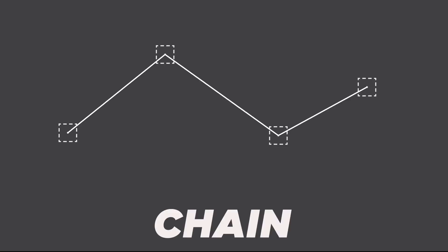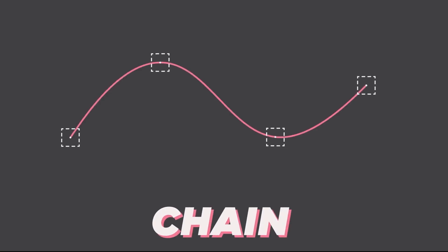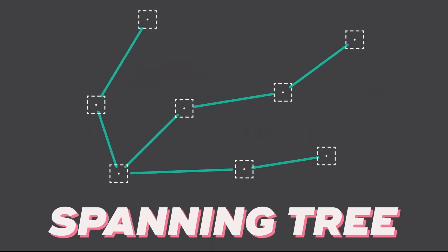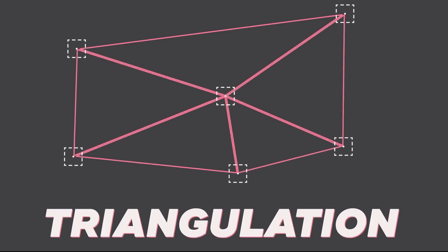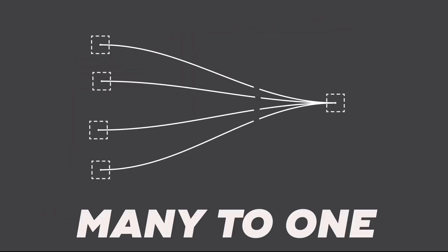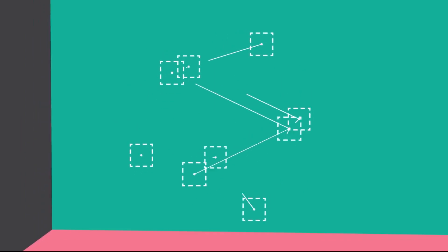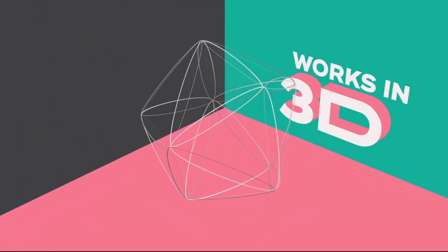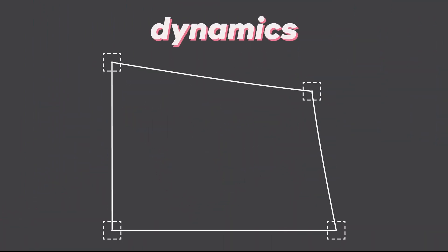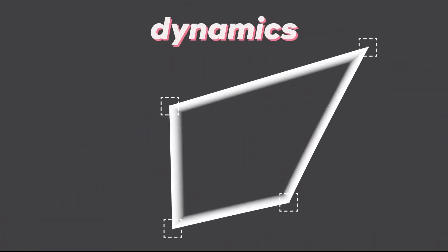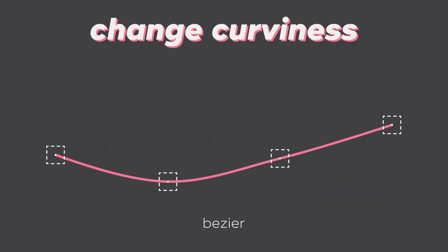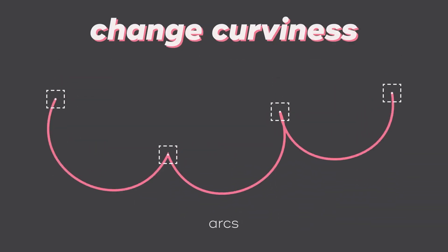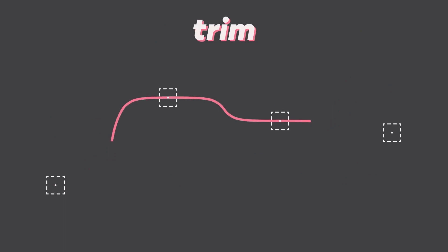Connect Layers is for connecting your After Effects layers with dynamic lines. I am personally using this tool on my motion graphics videos. You can create the same effect with the built-in plugin called Beam, but controlling them is always difficult. Connect Layers makes it easy and controllable. Not only connecting layers, but you can also create rope, spanning tree, and triangulation with a single click.